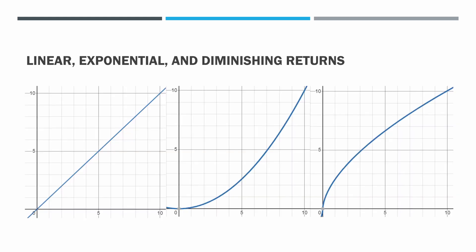In graph form, let's take a look at what that might look like. The first one is a linear formula. On our x-axis we have whatever the stat is — let's call it attack power — and our y-axis is damage. For every additional point of attack power you get an additional point of damage. It's linear — every additional one gives exactly the same amount more damage.